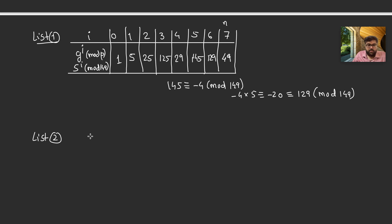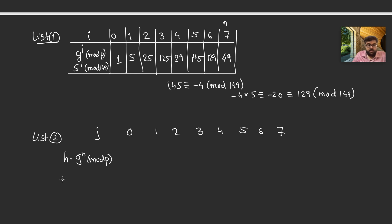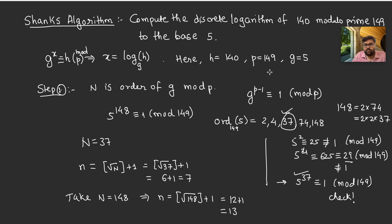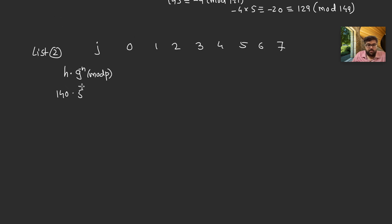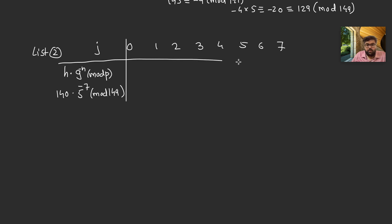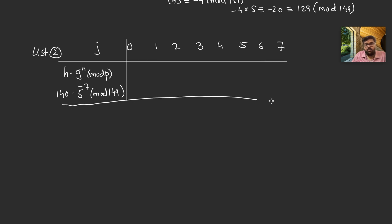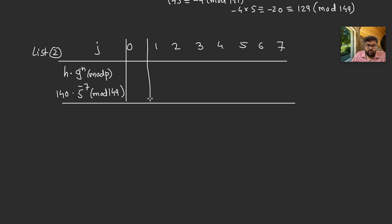Now for List 2: index j goes from 0 to 7, and we compute h × (g^{-n})^j mod p, that is 140 × (5^{-7})^j mod 149. When j = 0 this is just 140. We need to compute 5^{-7} mod 149, which means finding the inverse of 5^7 = 49 modulo 149.